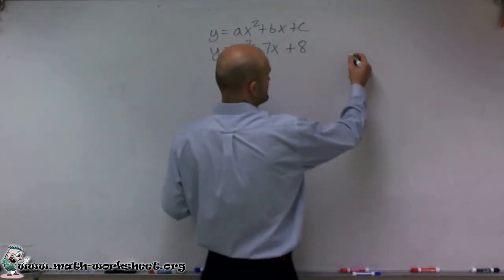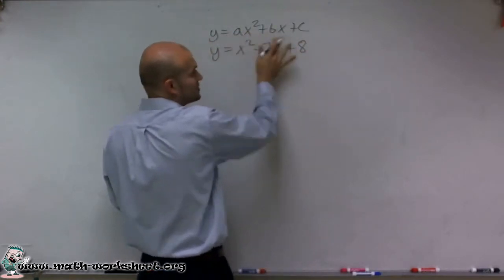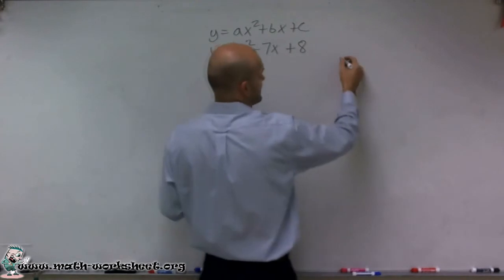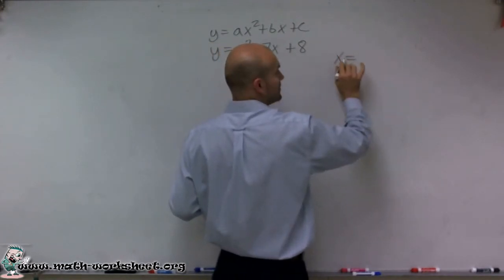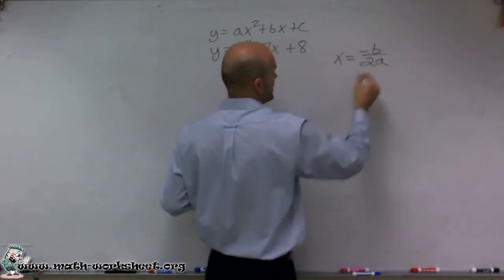That axis of symmetry has a certain formula. The axis of symmetry is the value of x equals negative b divided by 2a.